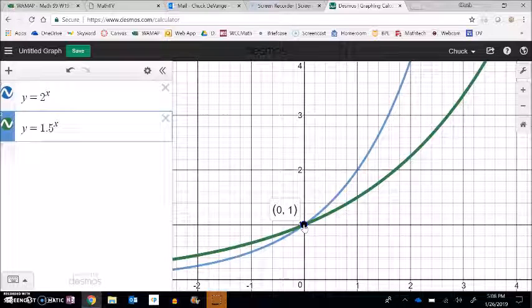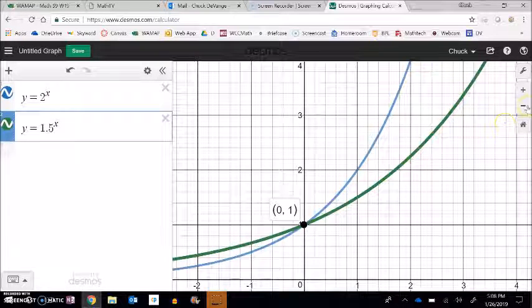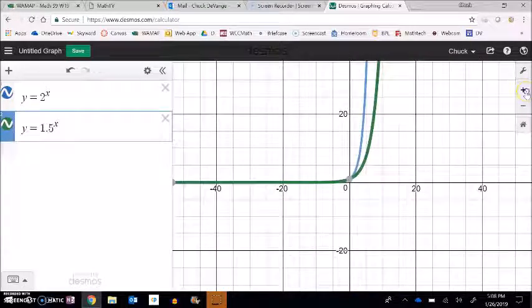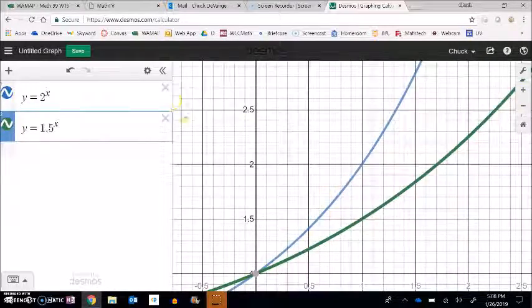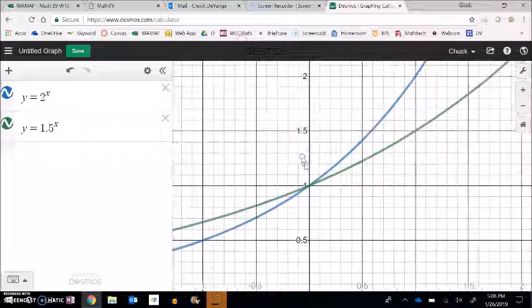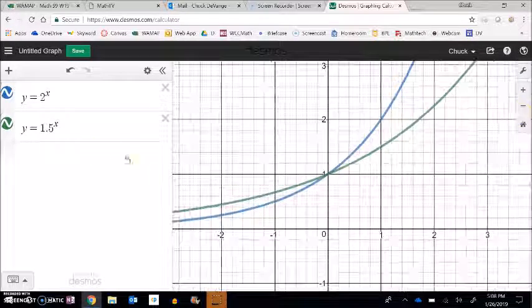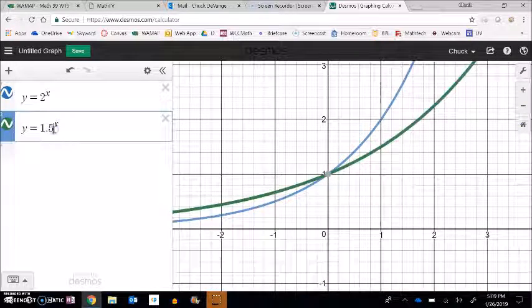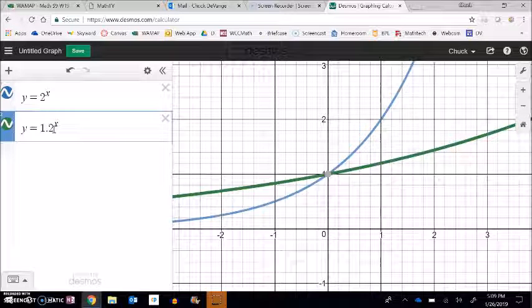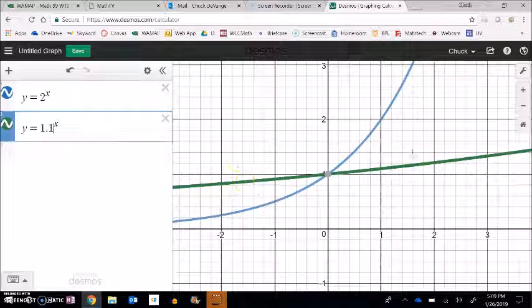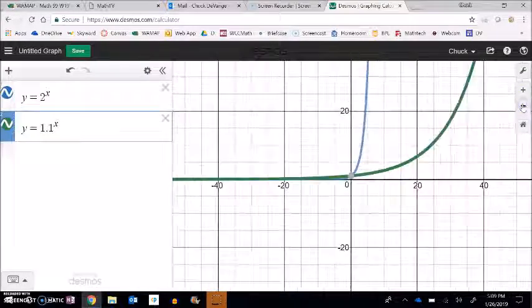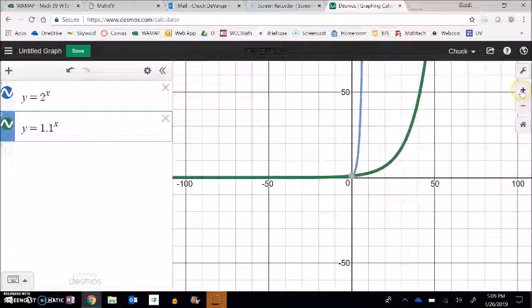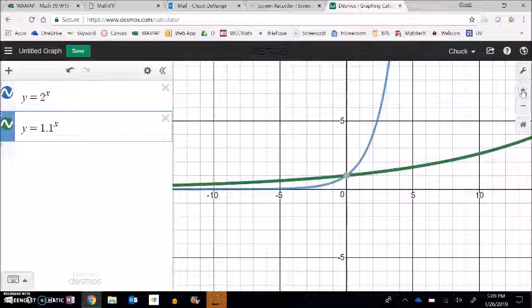I can make these smaller and smaller. I'm going to get rid of some of these. In other words, I could have y equals 1.5 to the x. It still goes to that 0, 1. It's just not growing as fast. But eventually, it starts to grow very fast. That's what exponential growth does. You know, I could even do something smaller than 1.5, 1.2, or 1.1. And it looks like it's almost a straight line. But if you zoom out on this, eventually, it starts to grow super fast. Again, that's what exponential growth will do.